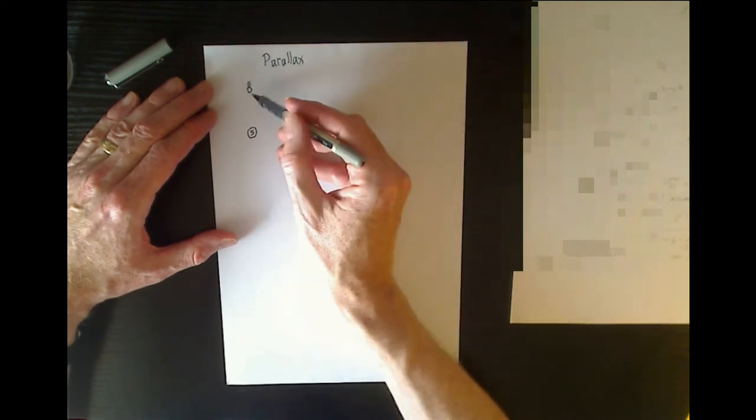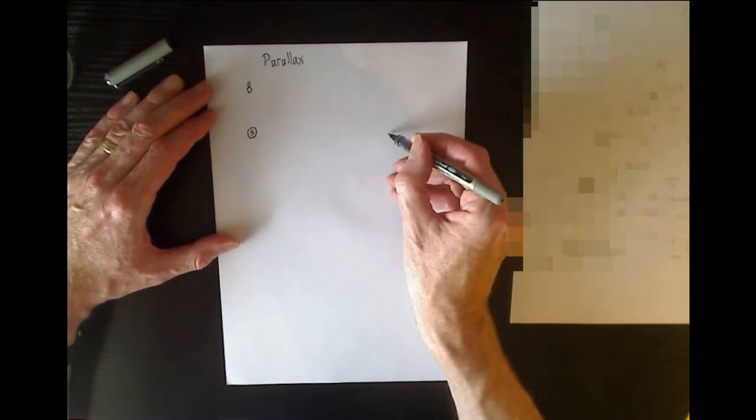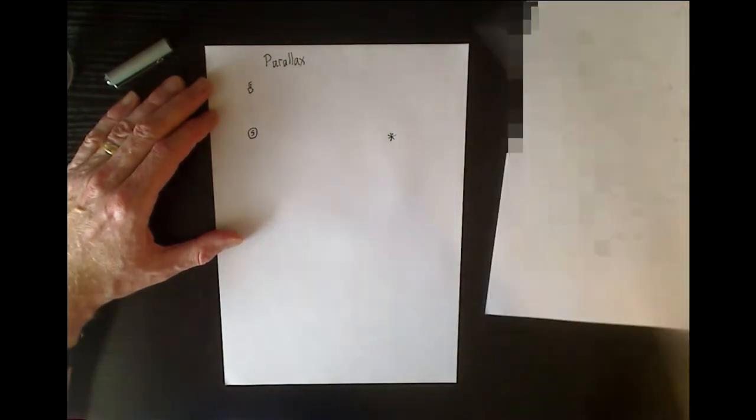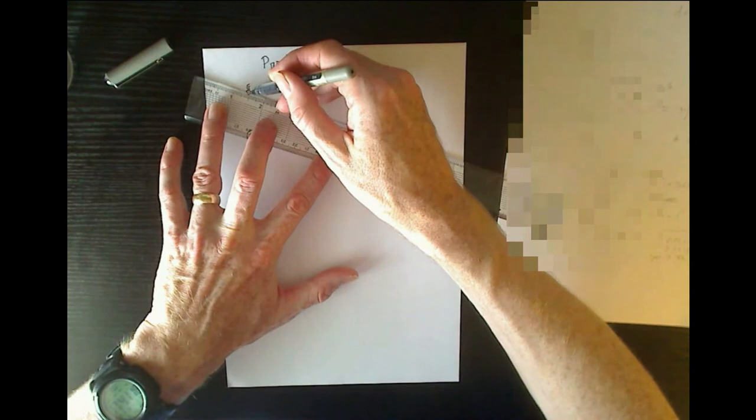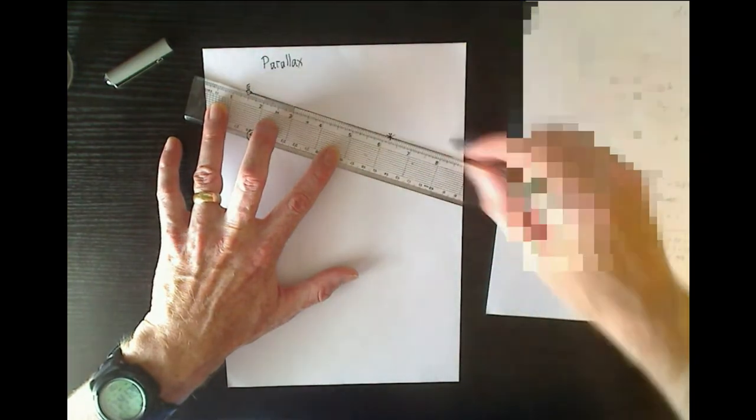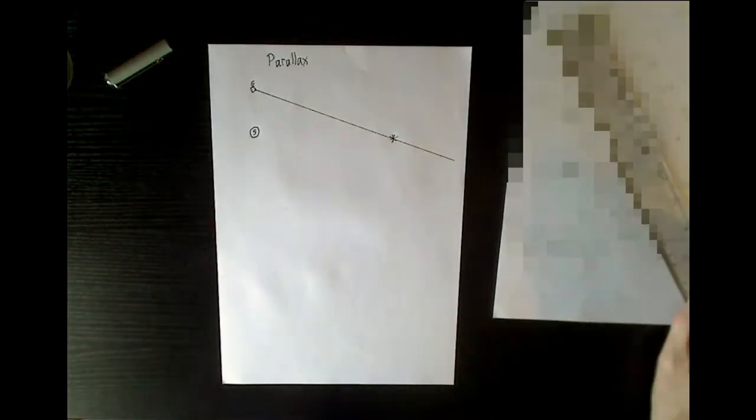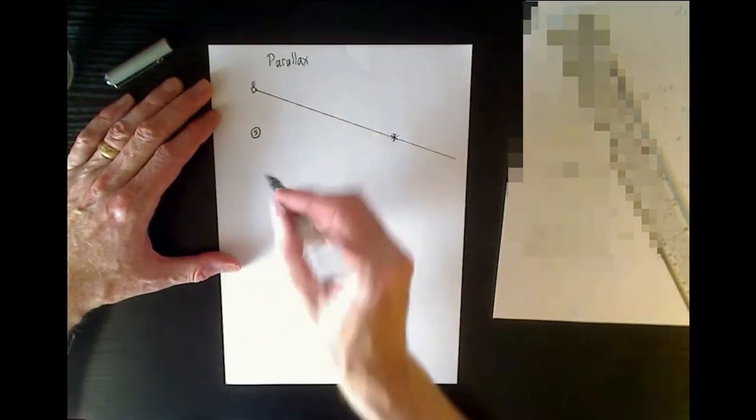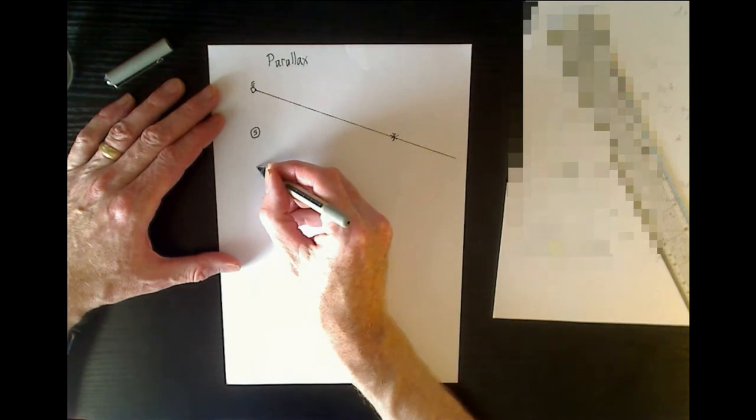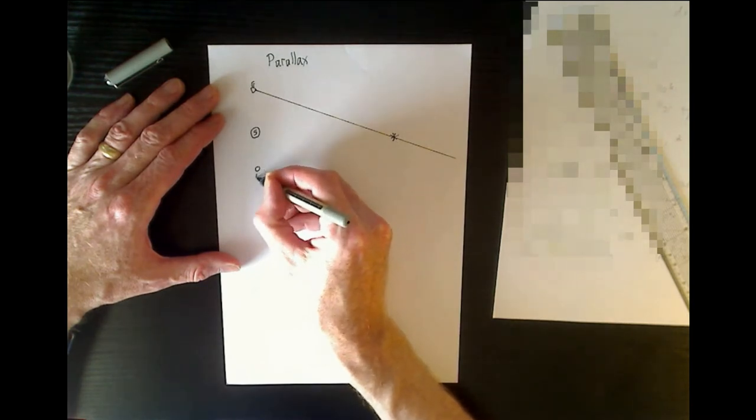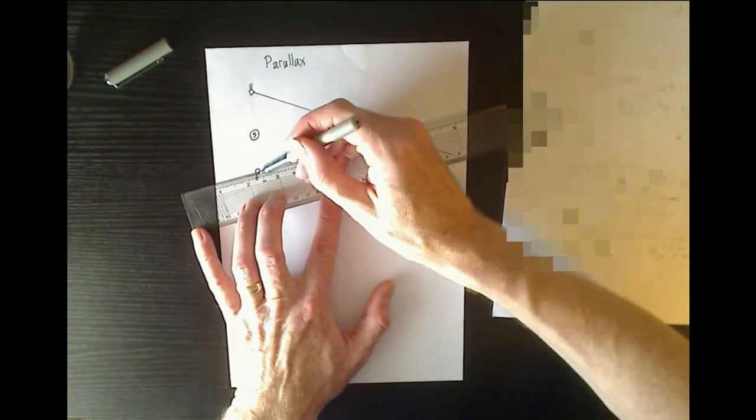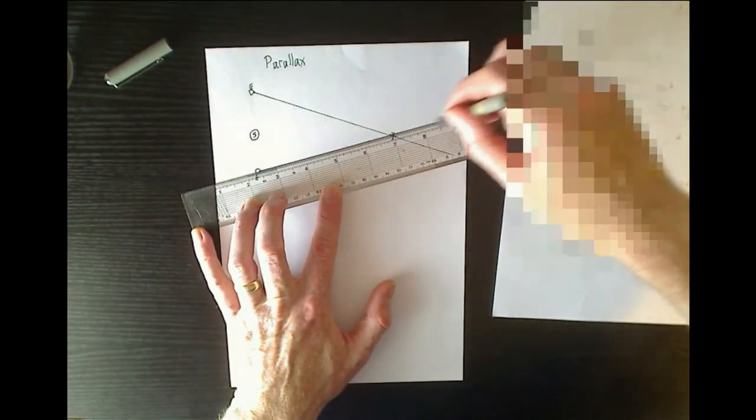Now if we're here in our orbit and we are looking towards a distant star over here, then we have a particular line of sight from the surface of the Earth towards that star. Six months later, the Earth has continued in its orbit and we find ourselves on the other side of the Sun, and we look towards the same star at this time with a different line of sight.